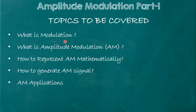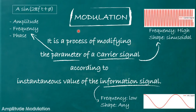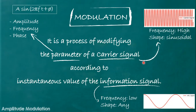Let us start with what is modulation. Modulation is a process of modifying the parameter of a carrier signal according to the instantaneous value of the information. The carrier signal is generally a high frequency sinusoidal signal, as shown here.